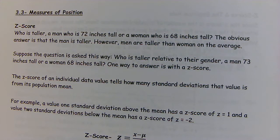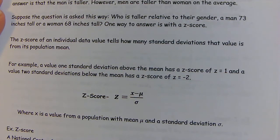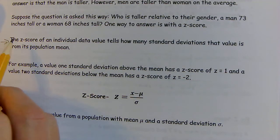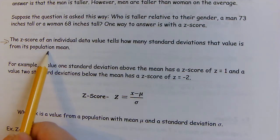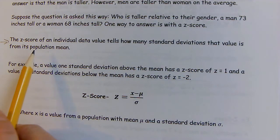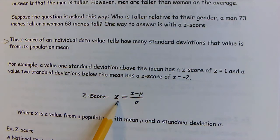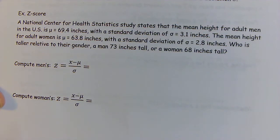3.3 measures of position. We're going to start with z-score. The z-score of an individual data value tells you how many standard deviations that value is from its population mean, whether it's above or below. So a z-score gives you the placement of standard deviations above or below the population mean for a data value.